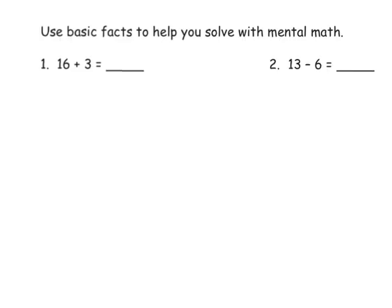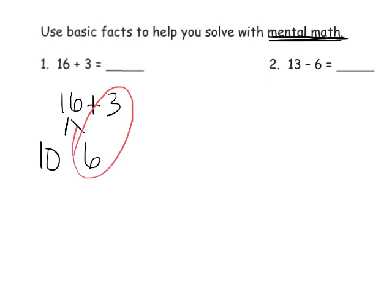Let's put this to practice. We've got 16 plus 3. It says mental math, but I'm going to show you what I want the kids to be thinking in their head. With 16 plus 3, we're going to take the 16 and decompose it to 10 and 6. Then 6 plus 3 is 9, so this becomes 10 plus 9 is 19.